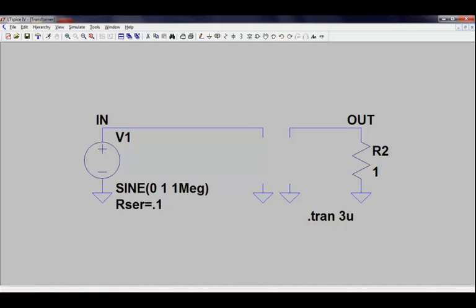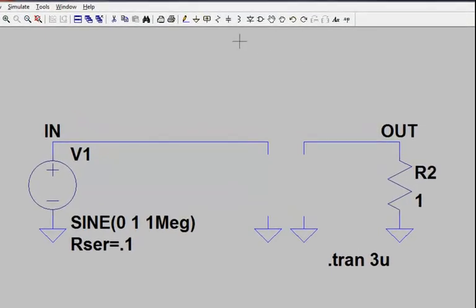To draw a transformer, we need to define each of the windings of a transformer using an inductor symbol. So let's go ahead and place two inductors side by side in our schematic.